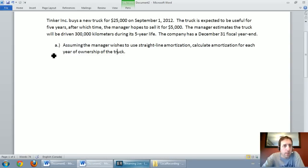Tinker Inc buys a new truck for $25,000 on September 1st 2012. The truck is expected to be useful for five years after which time the manager hopes to sell it for $5,000. The manager estimates the truck will be driven 300,000 kilometers during its five-year life. The company has a December 31st fiscal year end. Assuming the manager wishes to use straight line amortization, calculate amortization for each year of ownership of the truck. Let's go ahead and get to it.